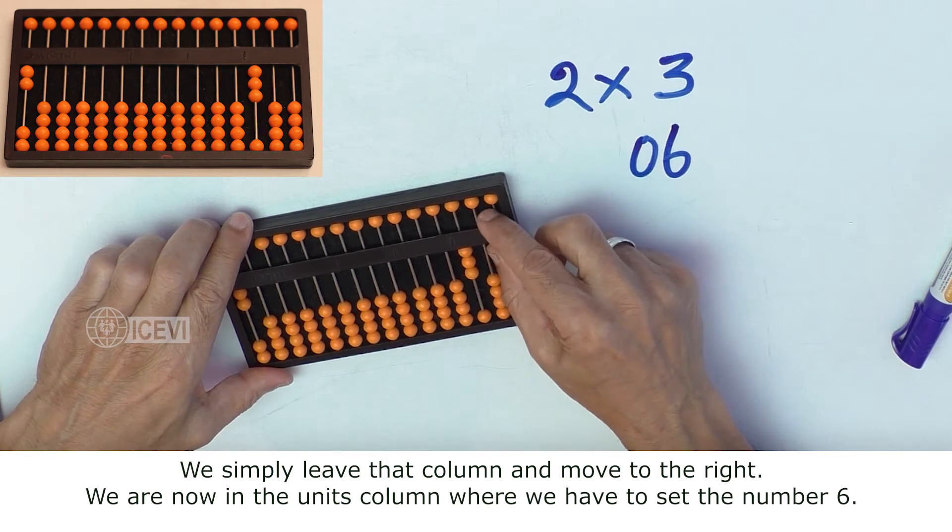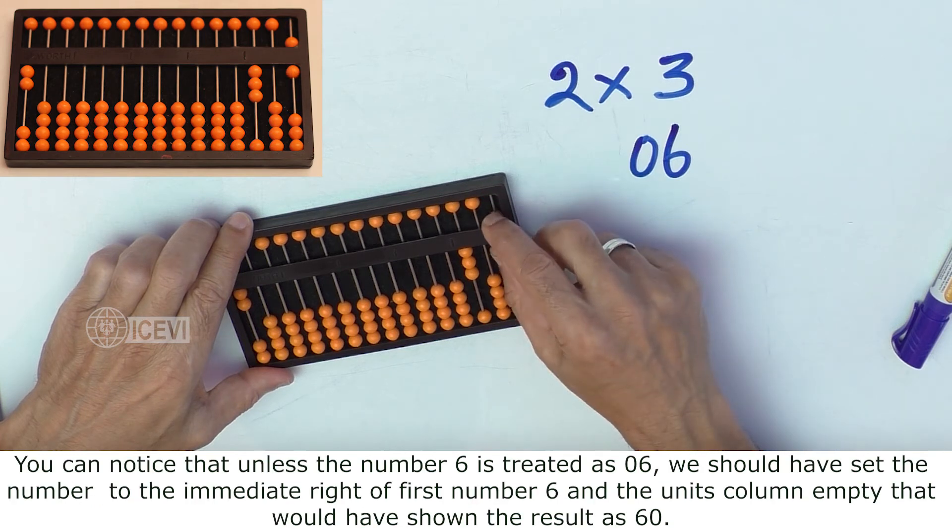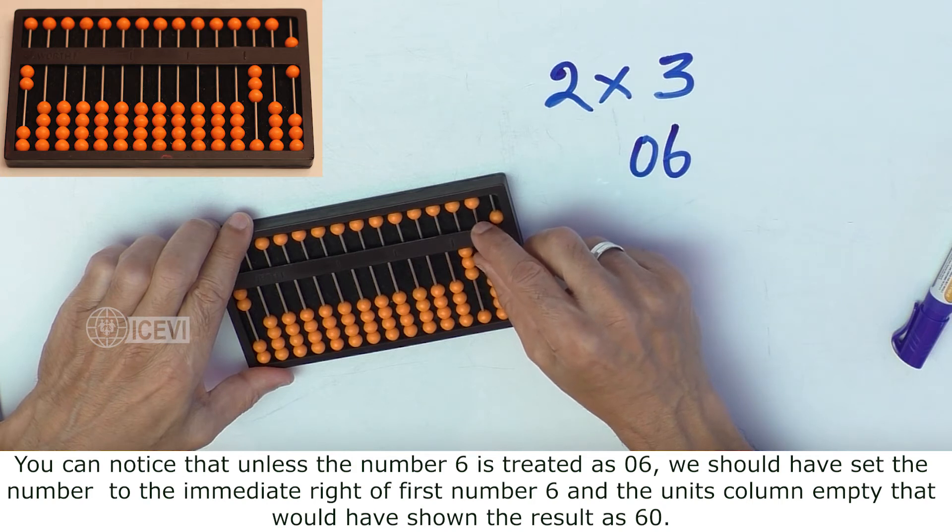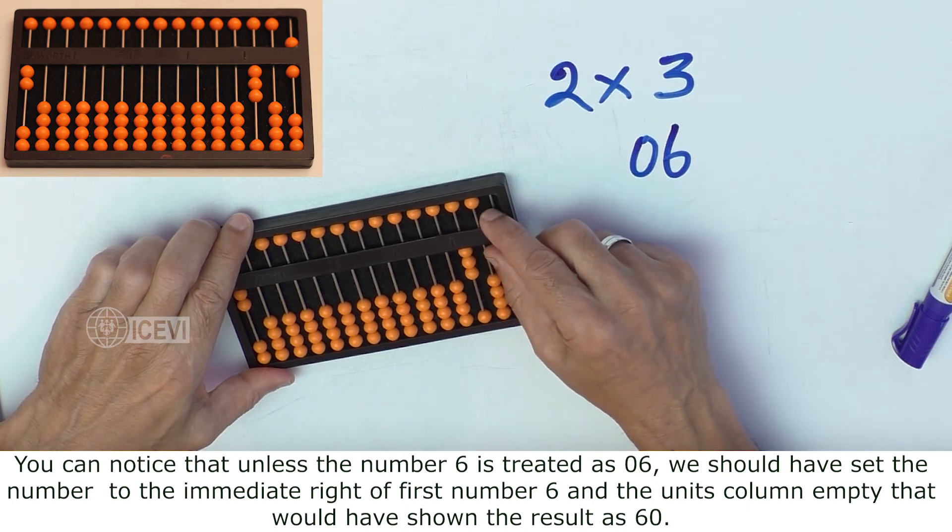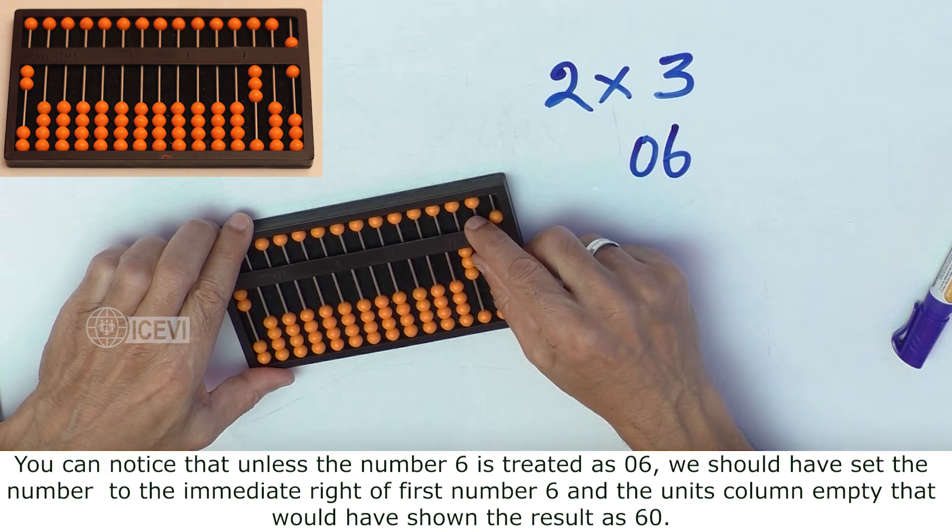We are now in the units column, where we have to set the number 6. You can notice that unless the number 6 is treated as 06, we should have set the number to the immediate right of the first number 6, and the units column empty, that would have shown the result as 60.